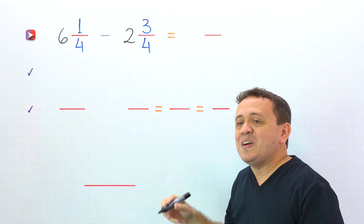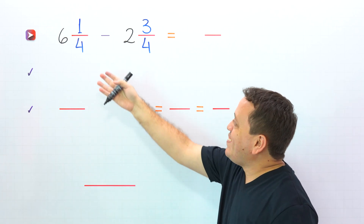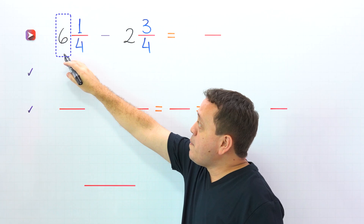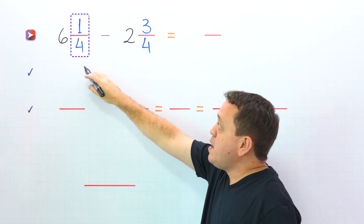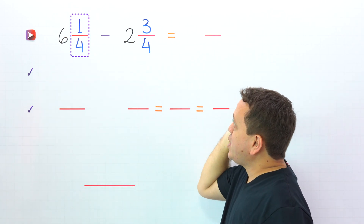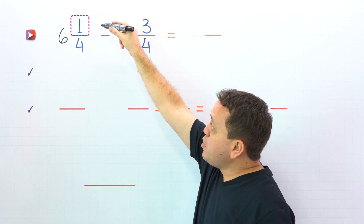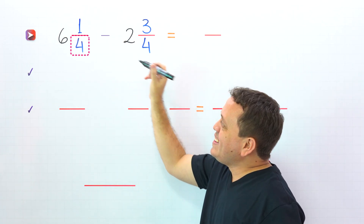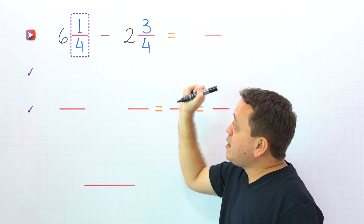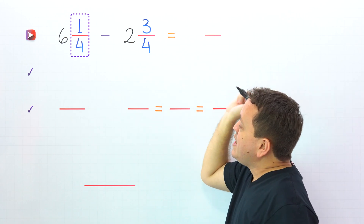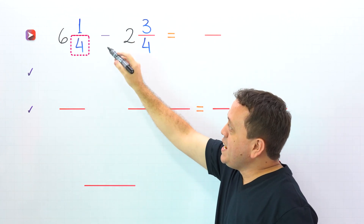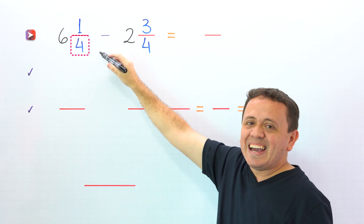Before getting into it, we need to remember that a mixed number is the sum of a whole number and a proper fraction. Also, a proper fraction is a fraction where the numerator — the top number — is less than the denominator, the bottom number. One-fourth is a proper fraction, given that the numerator 1 is less than the denominator 4.